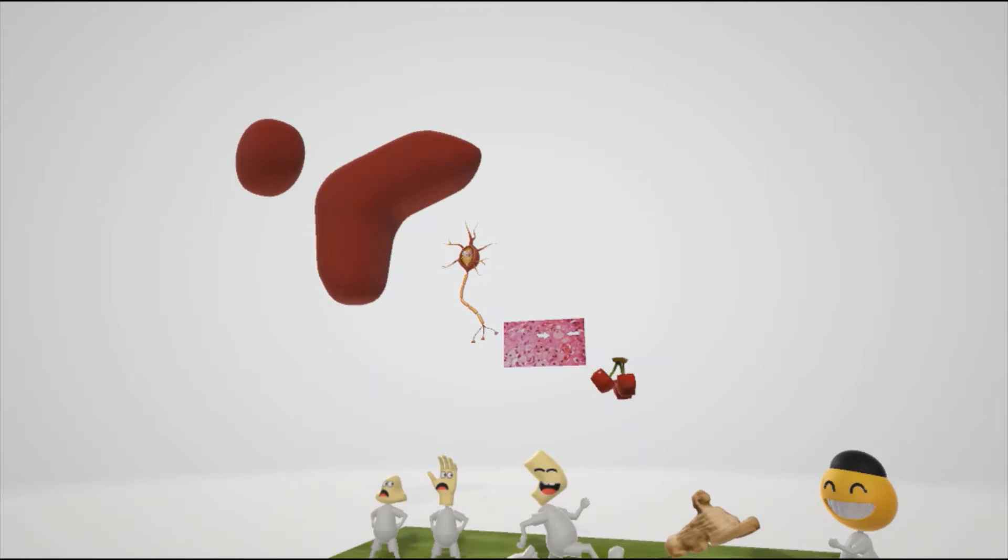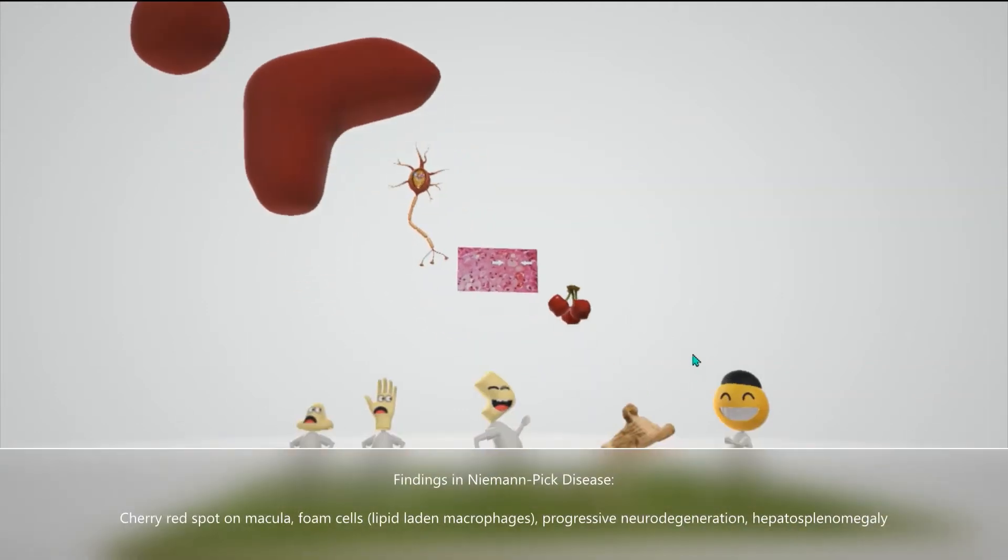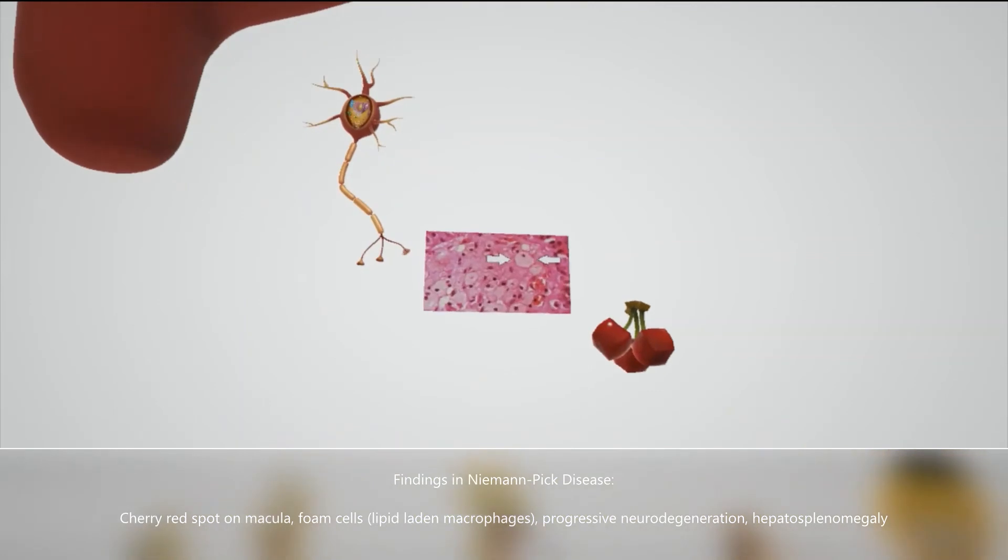As we can see here, the Sphinx goes shooting up and flies through all these objects in the air. These objects will help us remember the findings in Niemann-Pick Disease. First, it shoots through this thing of cherries. The cherries help us remember the cherry red spot on the macula seen in Niemann-Pick Disease due to the accumulation of Sphingomyelin in the retina.